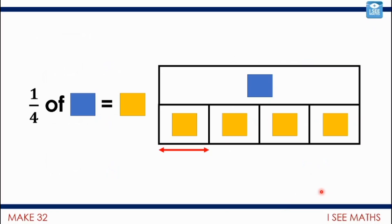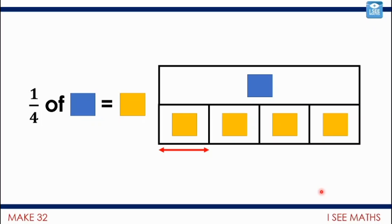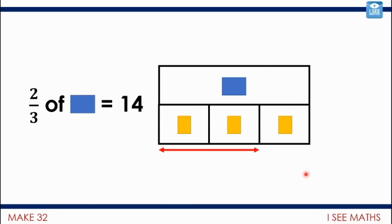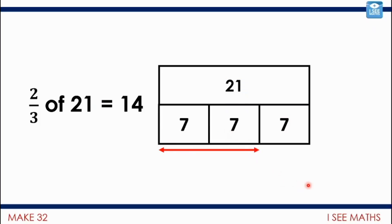Now look at this: a quarter of a number equals another number. What could the numbers be? Can you come up with different combinations? Pause and think. A quarter of something equals 15 - what would that whole amount be? A quarter of 60 is 15, because 4 lots of 15 equals 60. Now: two-thirds of a number equals 14. Each third must be 7, because two-thirds is 14, so the whole amount is 21.